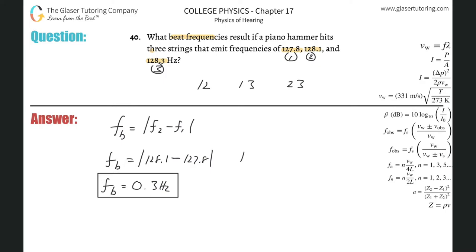What would be the next one? The next one would be the beat frequency between one and three. So three is 128.3, and this was 127.8. So the difference there is going to be 0.5.